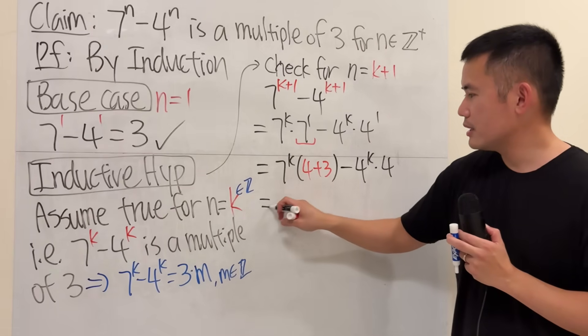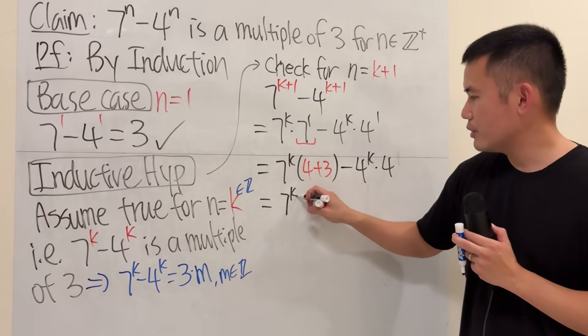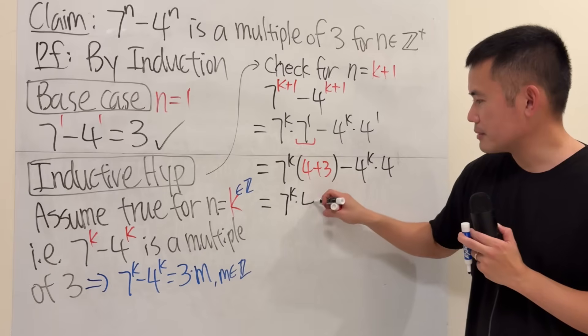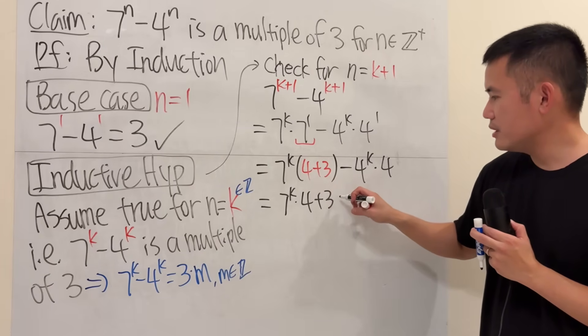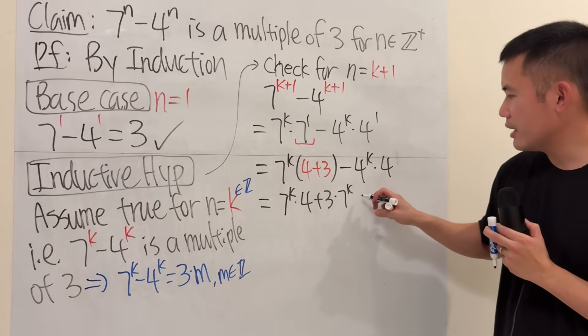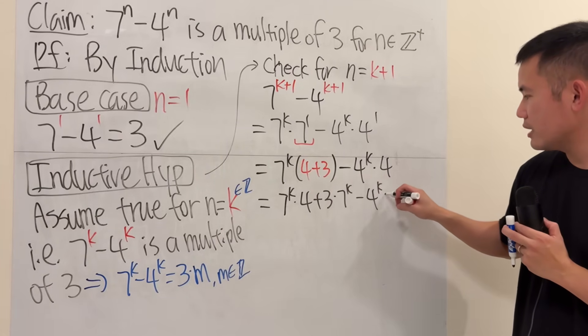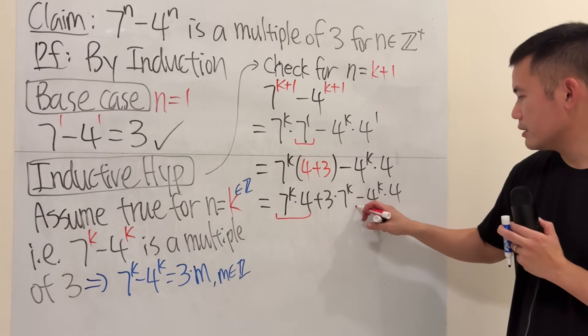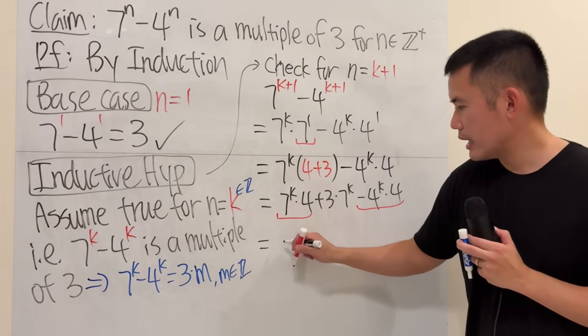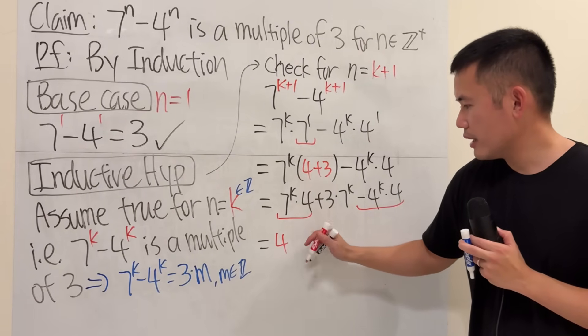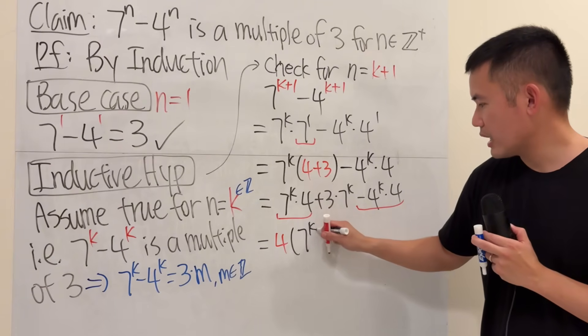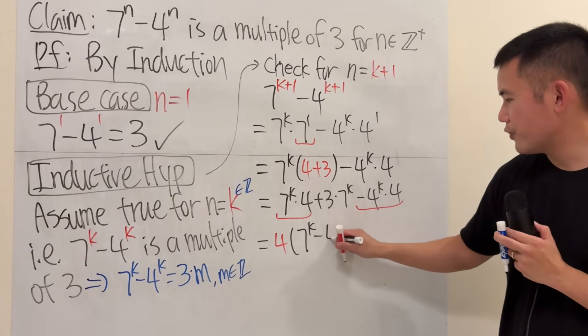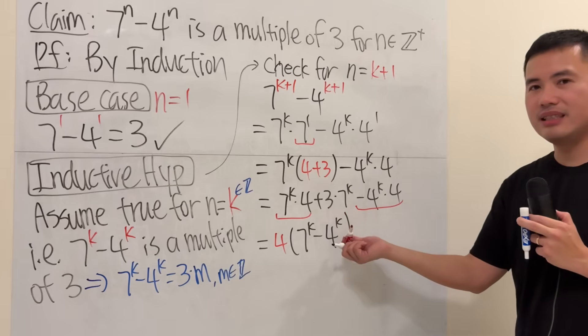And then just distribute. So this is 7 to the k times 4 plus 3 times 7 to the k, and then minus 4 to the k times 4. Now, as you can see, I can factor out the 4 from here. So I can factor out the 4, and I will get 7 to the k, and then minus 4 to the k. Ah, this is so nice.